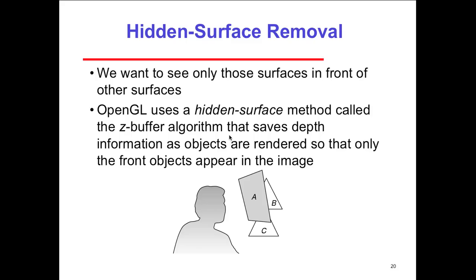So let me give you a formal definition of this hidden surface removal. We want to see only those surfaces in front of the other surfaces. We don't care about the ones that are underneath. So OpenGL uses what's called a hidden surface method, called a z-buffer algorithm, that saves the depth information as the objects are rendered, so that only the front objects appear in the image. Because if we don't need the data, we shouldn't be saving it and we shouldn't be using it. Because one thing is going to essentially overwrite another thing. And so we can just essentially display the overwritten material, essentially.